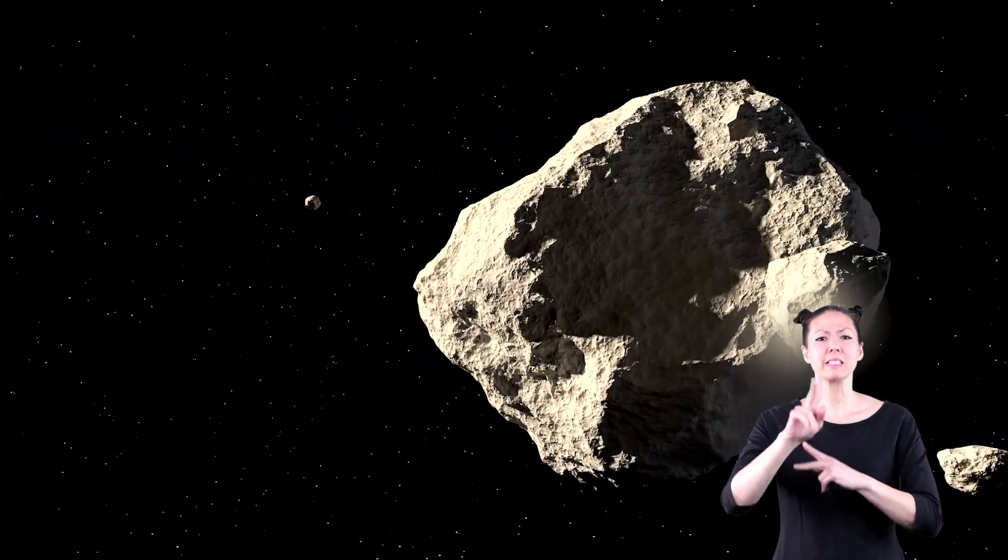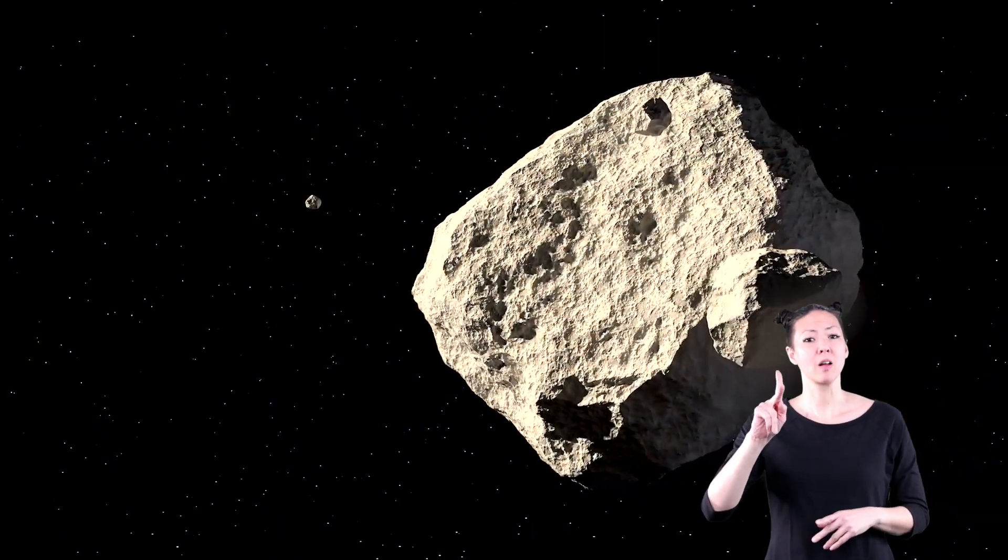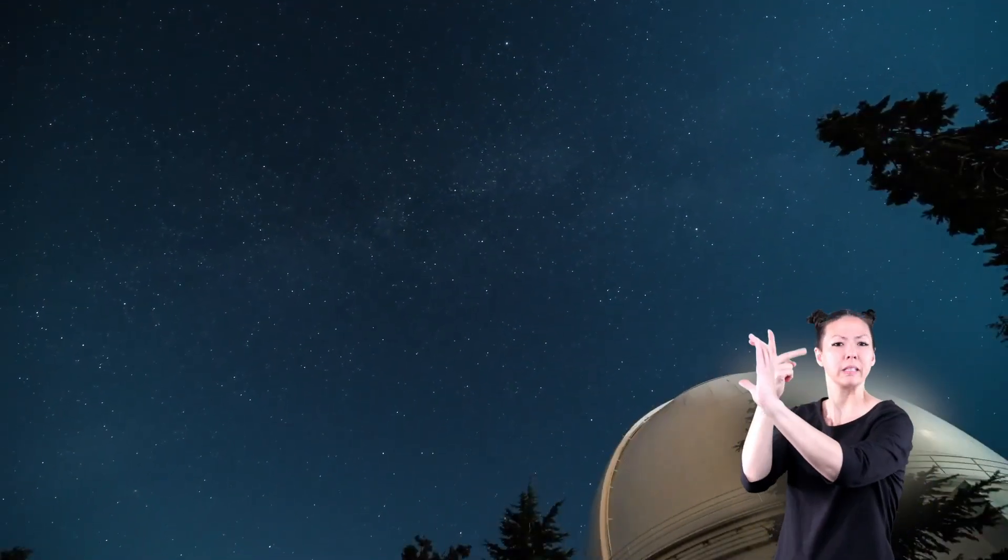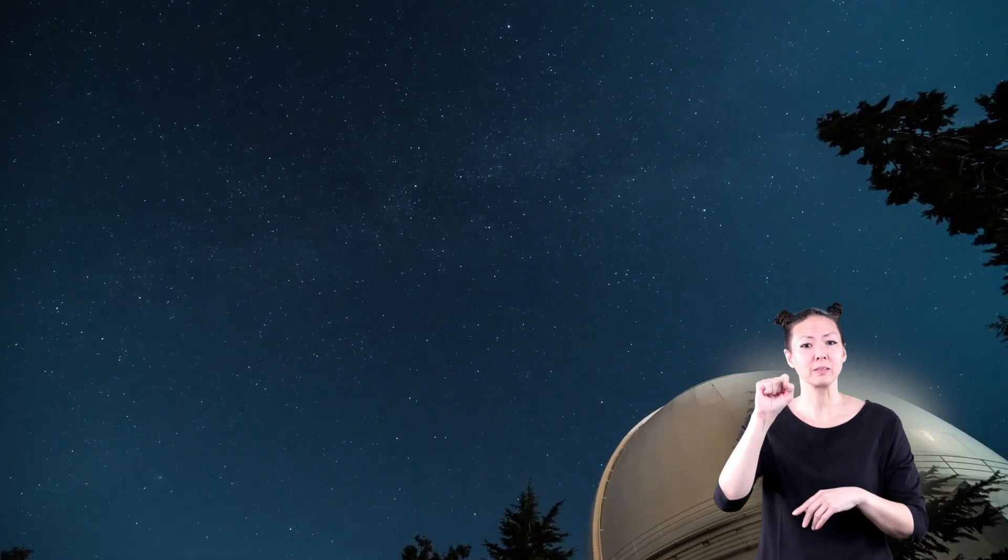A comet is a type of space rock. Though they are bright, comets in the outer part of the solar system are too small to be seen from Earth. Usually only astronomers with high-powered telescopes can see those comets as they pass through our solar system.